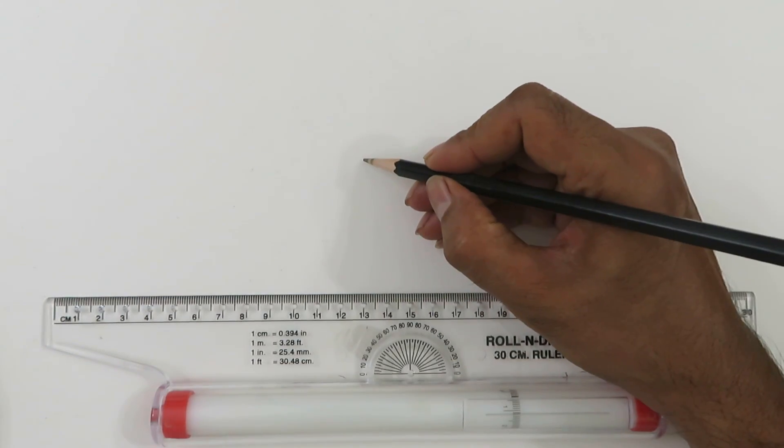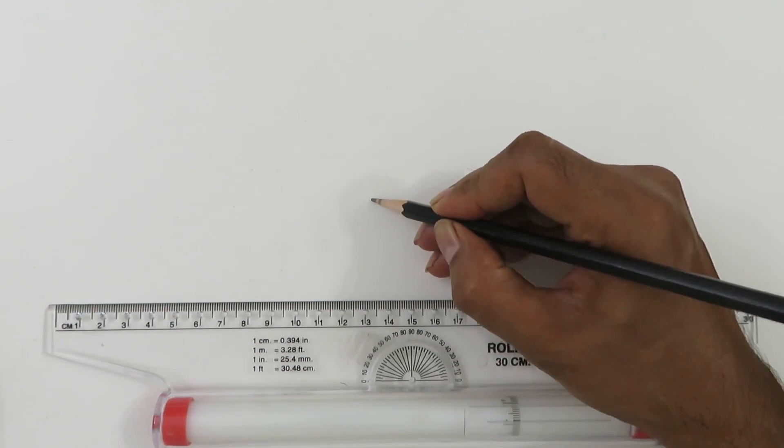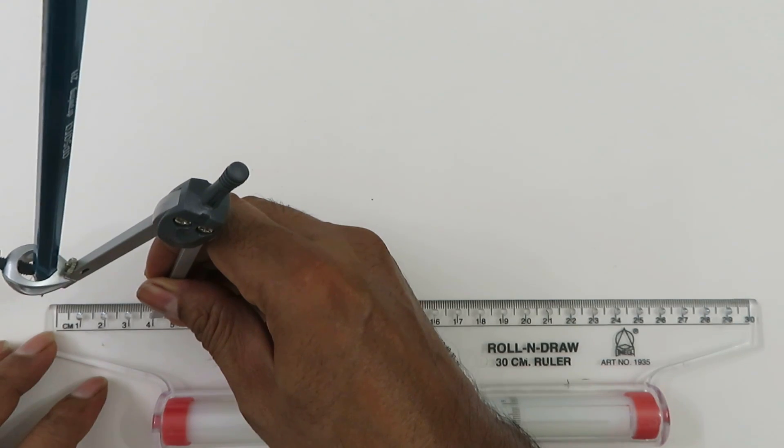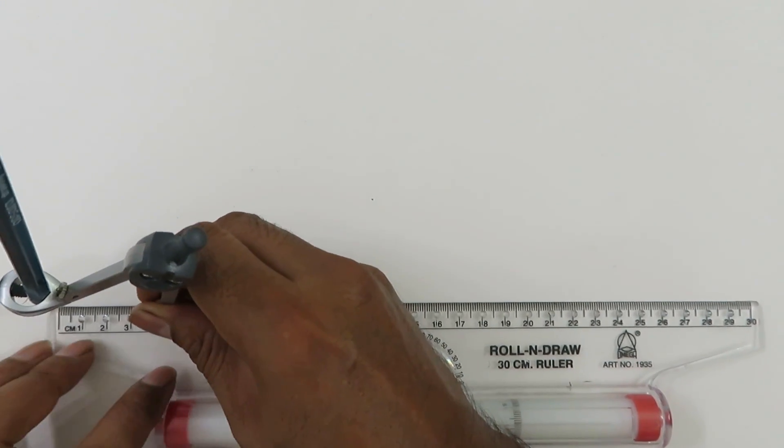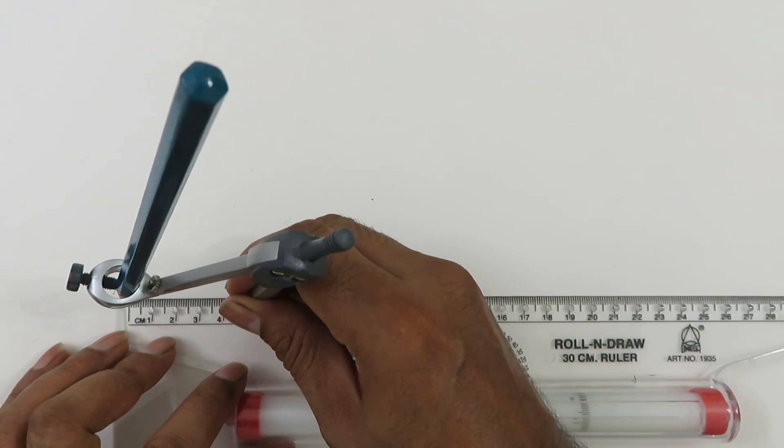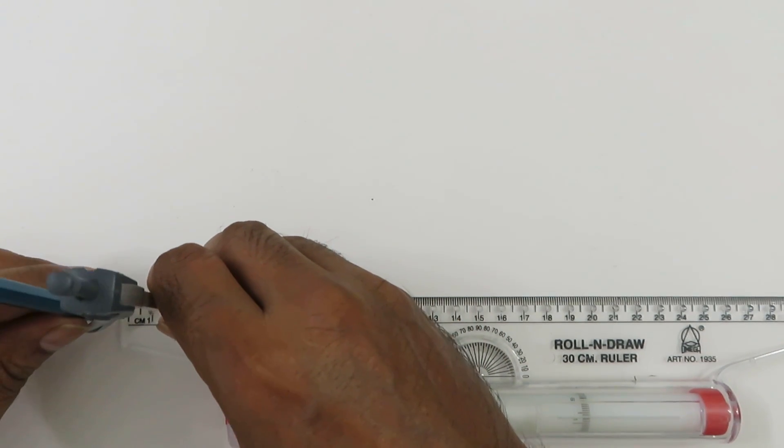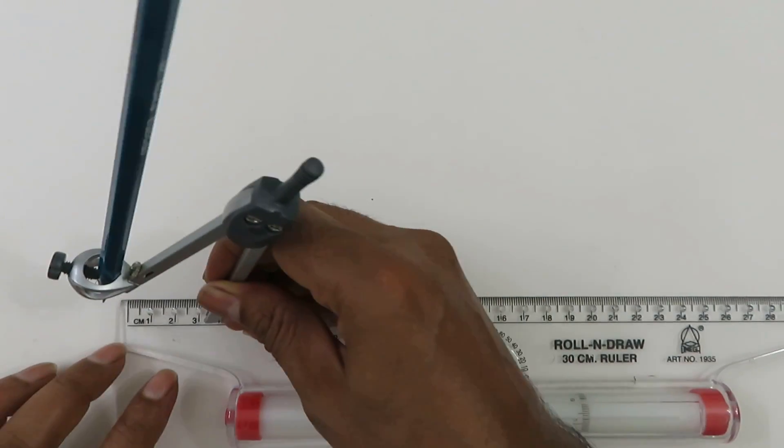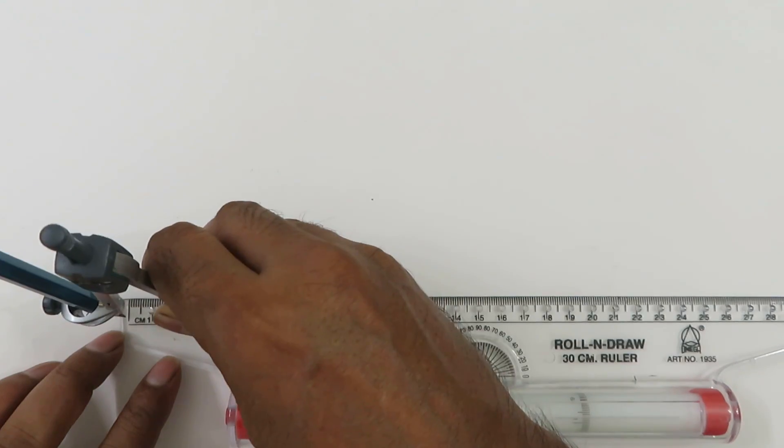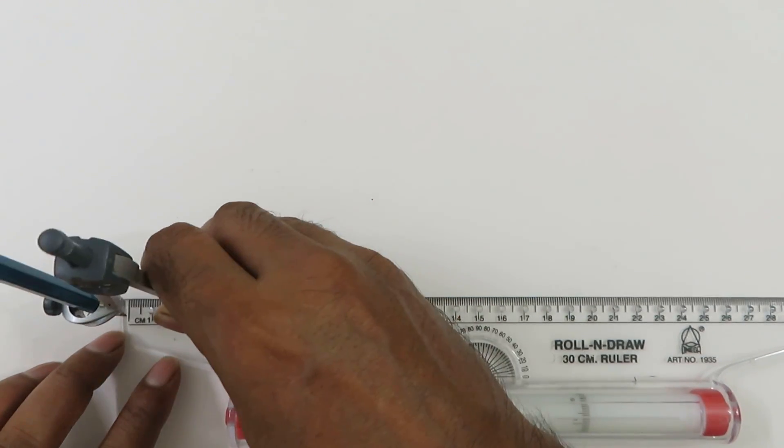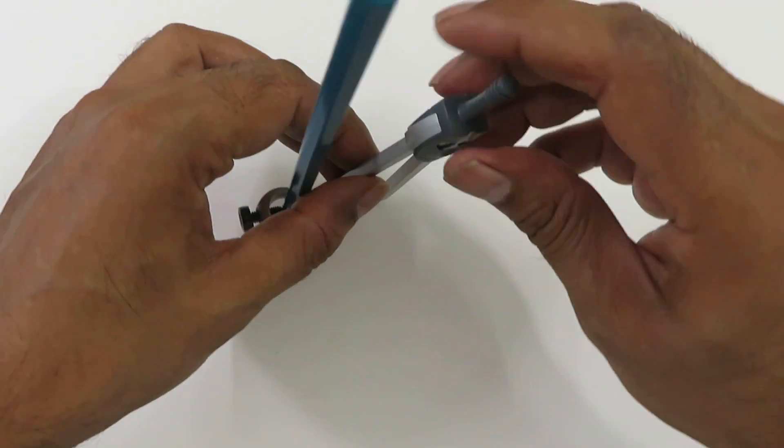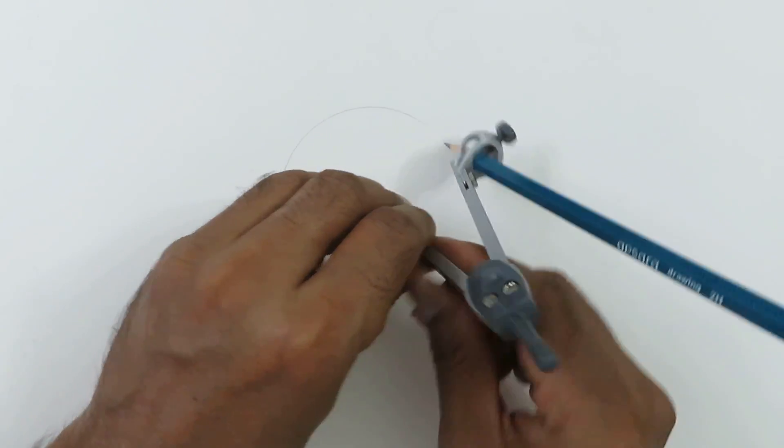You can select any circle. Let's use 40 millimeter as the radius. So with 40 millimeter as the radius, we draw this circle.